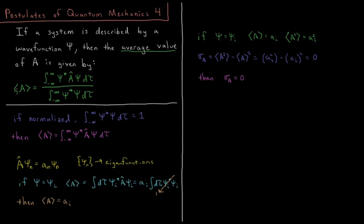When the wave function is not normalized, the most general form we use is the integral over all space of psi star times the operator acting on psi, divided by the integral over all space of psi star times psi. If it is normalized, then this integral on the bottom is equal to one. You can still include it if the wave function is normalized — it'll just give you a one — but it's extra work.